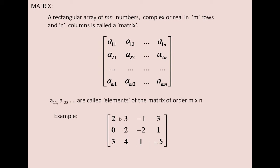This is first column: 2, 0, 3 in first column, 3, 2, 4 in the second column, minus 1, minus 2, 1 in the third column, 3, 1, minus 5 in the fourth column.